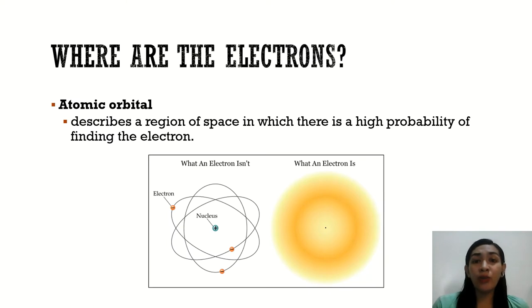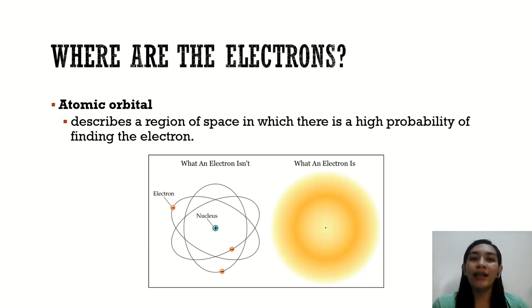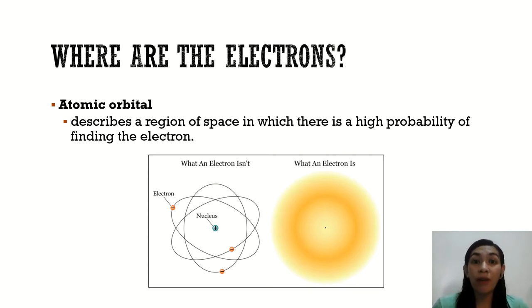Where could we find the electrons? At any point in time, an electron can be anywhere, but it is probably contained somewhere in the volume described by its orbital shape or its atomic orbital. An electron would be moving around or moving between the orbitals by simply absorbing or emitting a packet or quantum of energy.